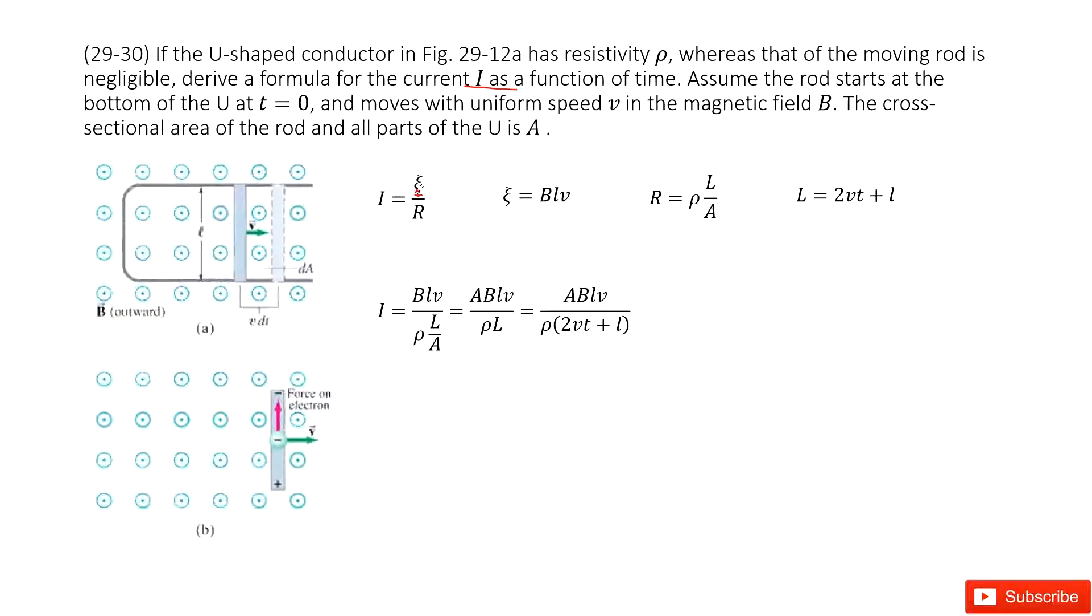Where does this induced EMF come from? The moving bar. So in this textbook, EMF is BLV. This L is the length of the bar.